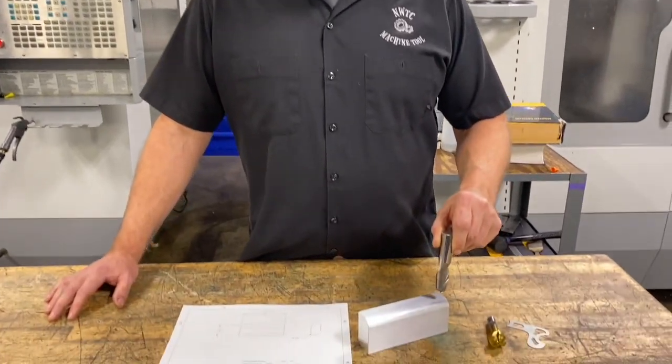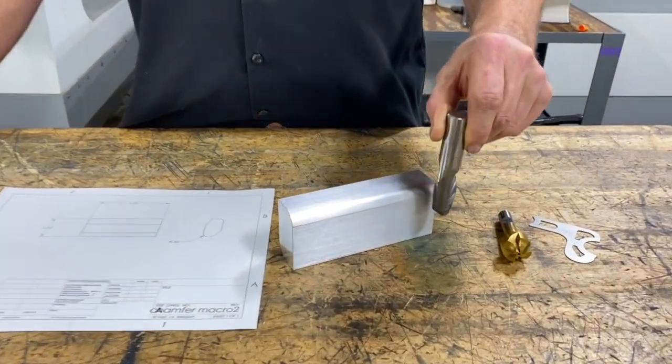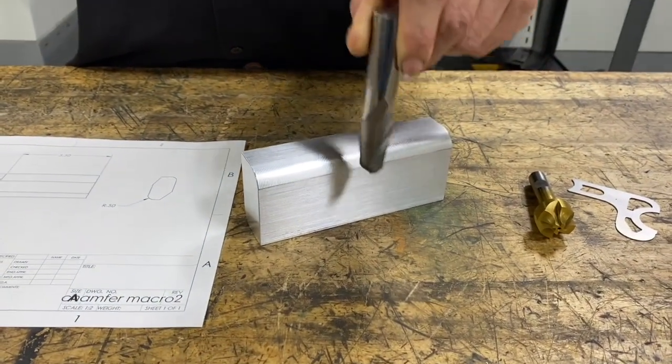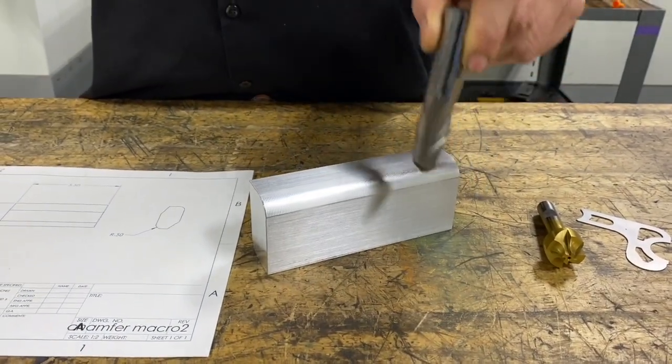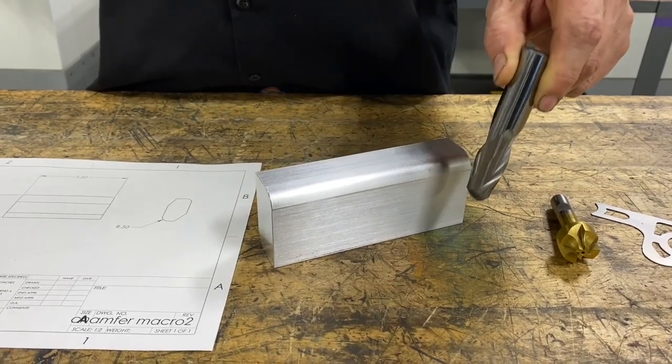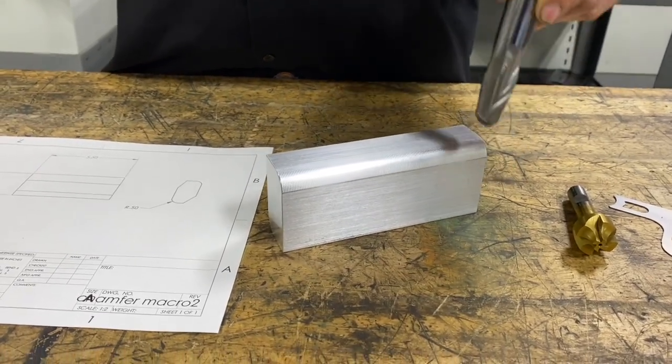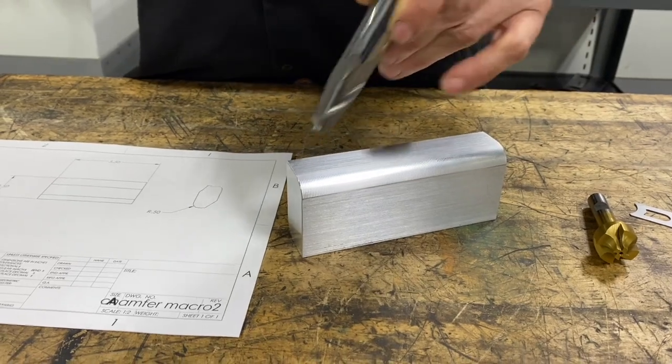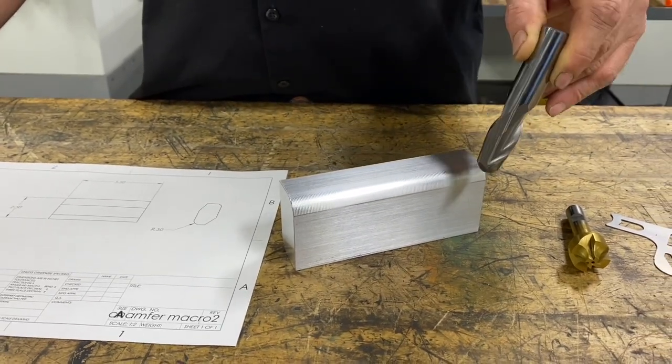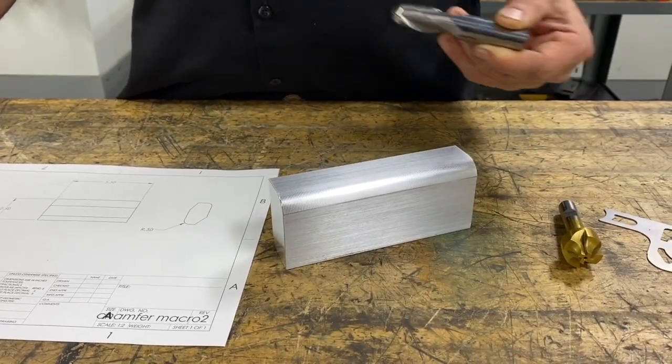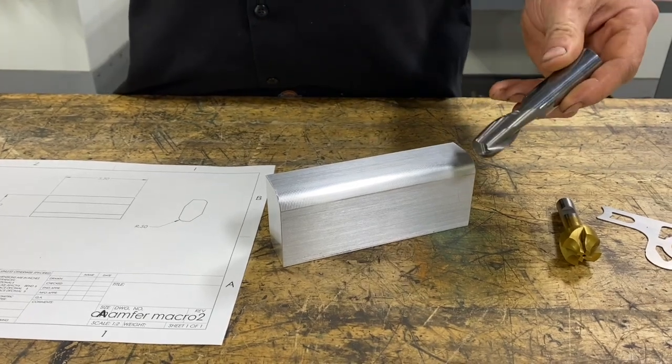Now looking at this specific tool path where we're machining that radius in the Y and Z plane, we're doing a lot of positioning along the Y axis, so we're doing a lot of movements that are not actually removing chips. Not the most efficient way to do this type of operation, but just a real simple, quick program. You can see very little G-code to accomplish this.